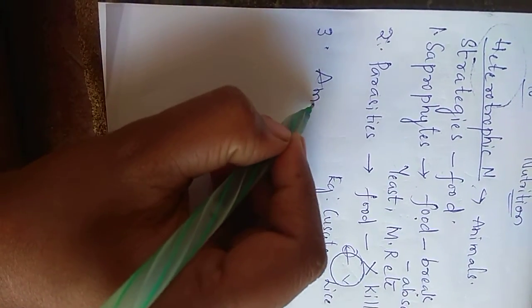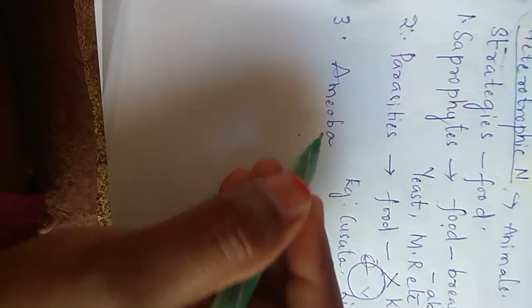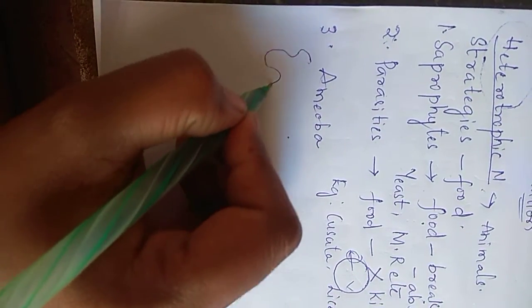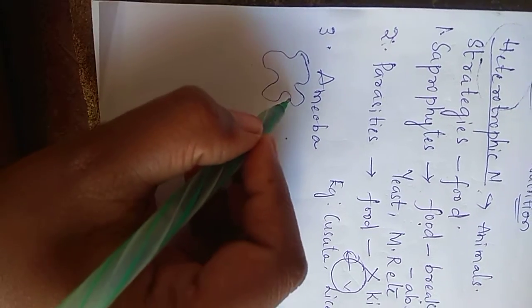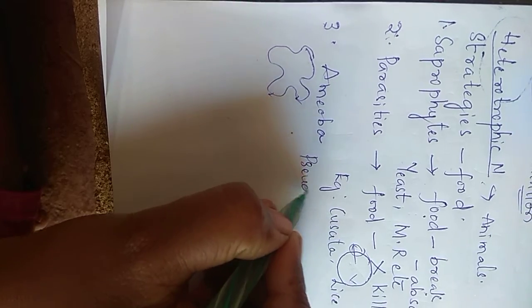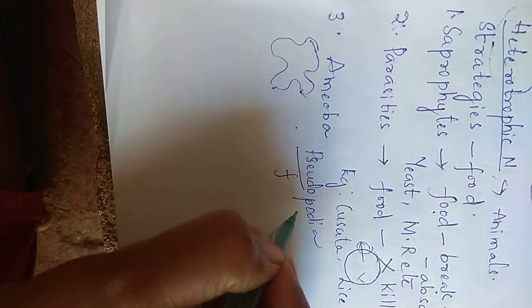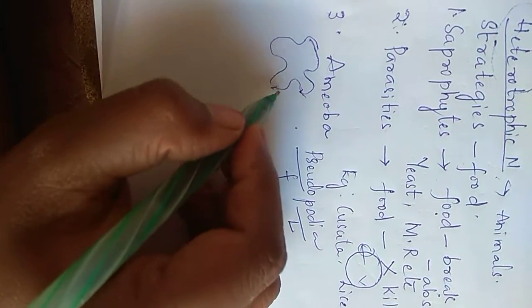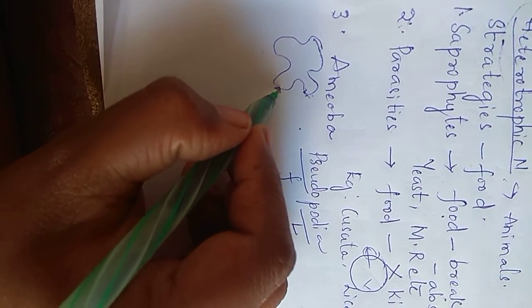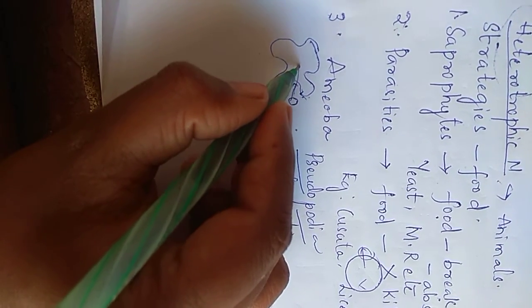Amoeba is a single cellular organism. How will it get food? For example, this is amoeba. These are called pseudopodia. Pseudo means false, podia means legs. These are false legs. With the help of these it will obtain the food and send it inside.